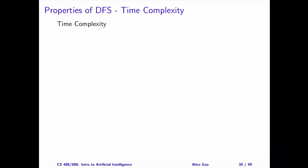Let's think about time complexity. How many nodes does DFS need to visit in the worst case? In the worst case, DFS will not find the goal node until it has explored the entire search tree. How many nodes are there in the search tree?